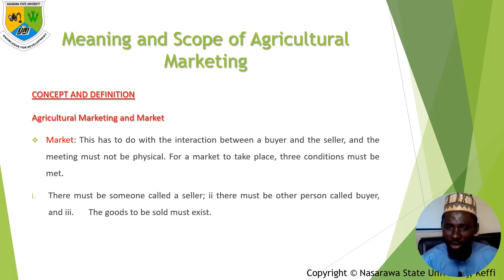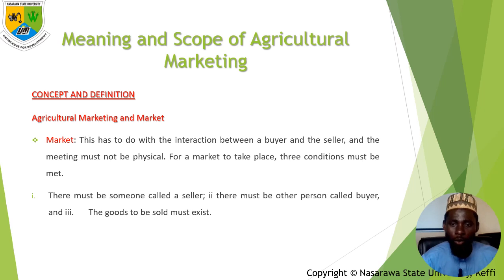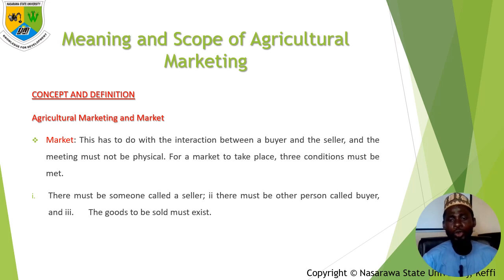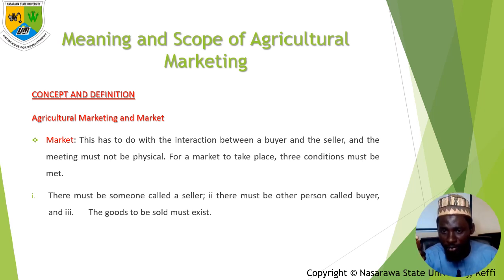A market has to do with the interaction between a buyer and a seller, and the interaction or meeting doesn't necessarily have to take place in a physical location. For a market to take place, there are three conditions that should be met. One, there must be someone called a buyer. Two, there must be someone called a seller. And most importantly, the good to be sold must exist. If these three conditions are met, then a market has taken place — it doesn't matter how the buyer and seller meet.